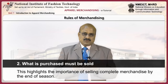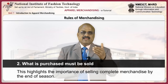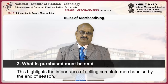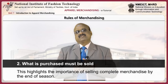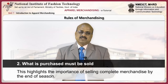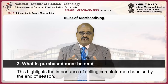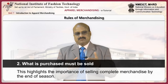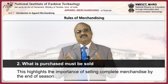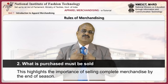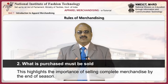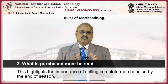'What is purchased must be sold' — the second thumb rule — highlights the importance of selling complete merchandise by the end of the season. Ideally, by the end of the season, the stock meant for the season should be completely sold out. Sometimes the stock can be kept in inventory for the same season next year, but this is dangerous, as the same season next year generally has a completely new set of fashions in vogue. So, merchandisers must follow the thumb rule: what is purchased must be sold.